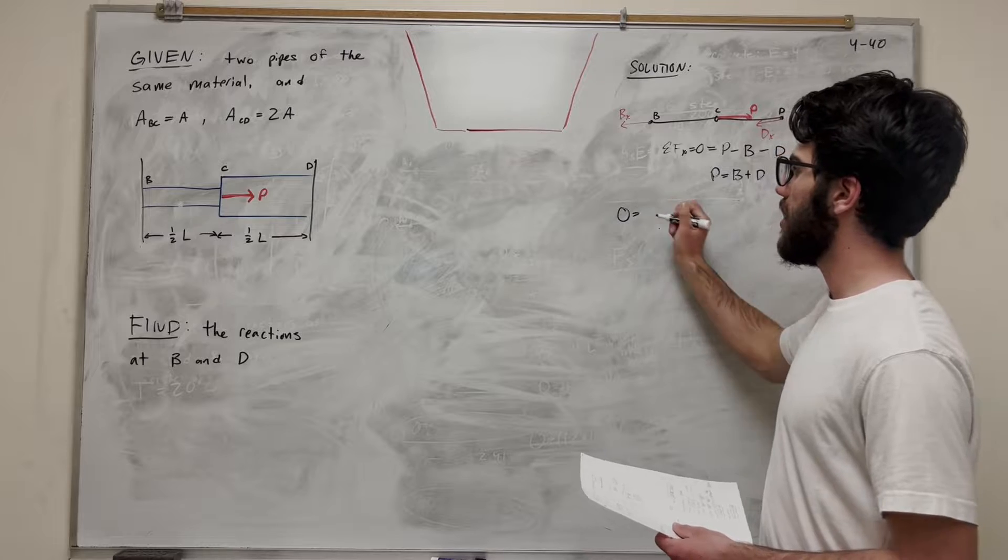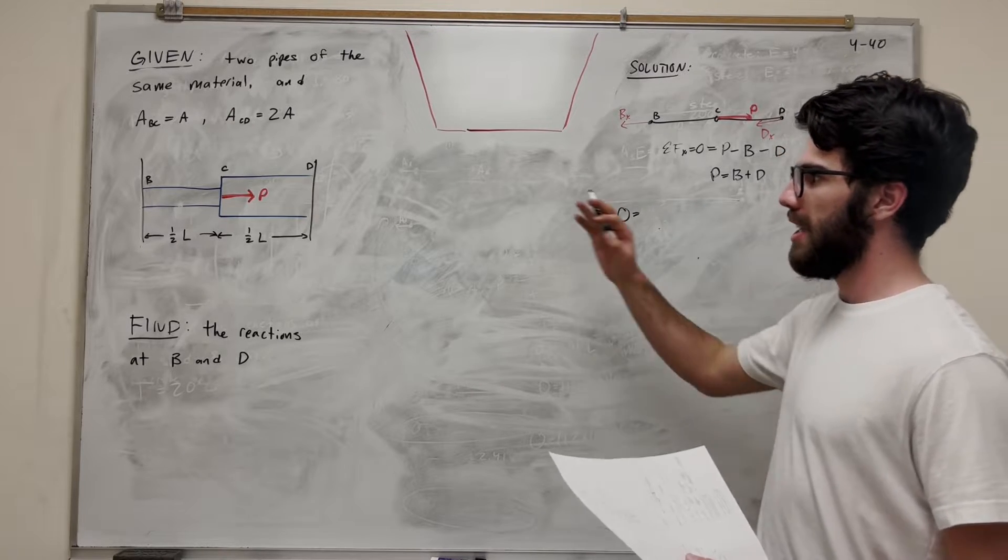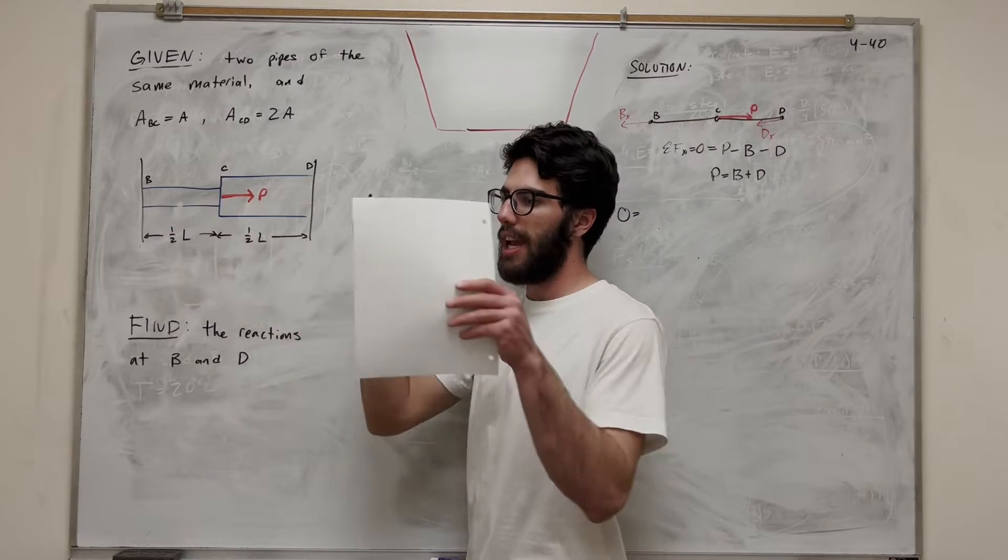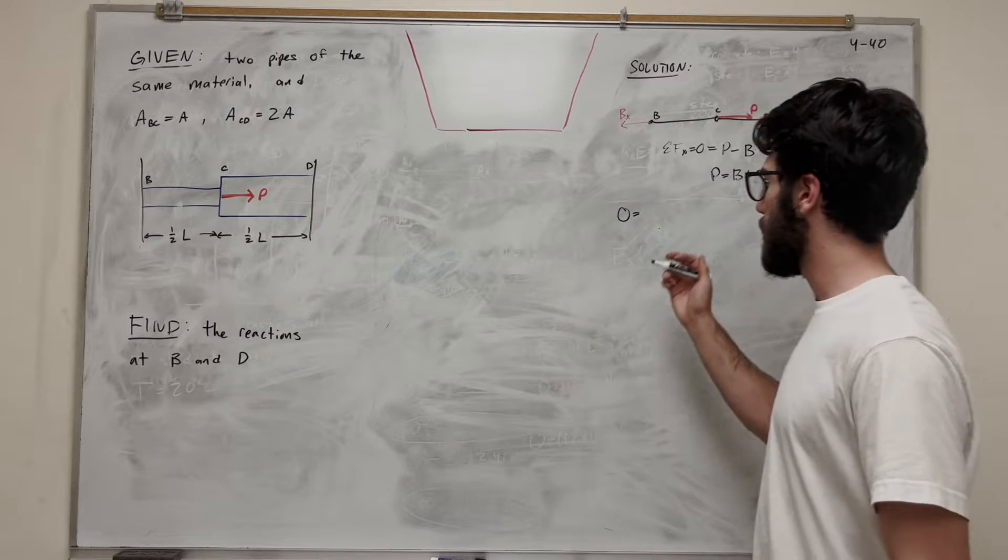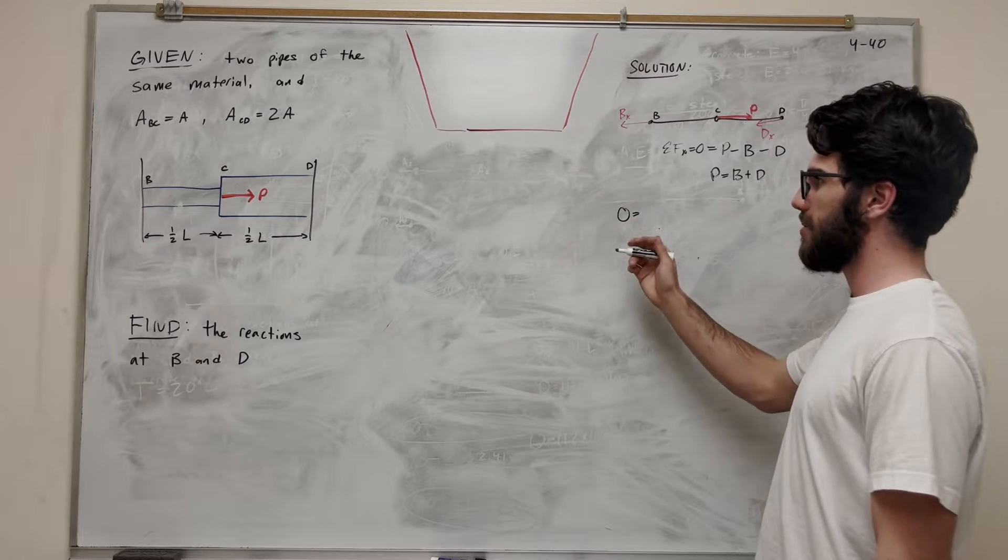So zero, right? Our configuration says that B and D have to stay in the same place. We can't expand or contract because the wall is fixed. So we know that it's equal to the displacements.